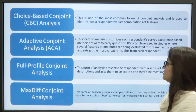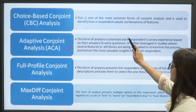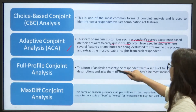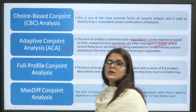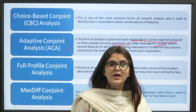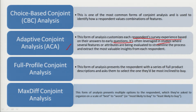Adaptive conjoint analysis customizes each respondent's survey experience based on their answers to early questions. It is often leveraged in studies where several features or attributes are being evaluated, in order to streamline the process and extract the most valuable insights from each respondent.